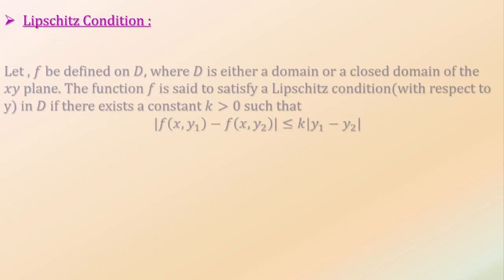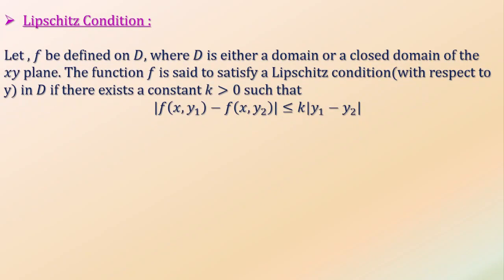Let's see what is Lipschitz condition. Let f be defined on D where D is either a domain or a closed domain of the xy plane. The function f is said to satisfy a Lipschitz condition with respect to y in D if there exists a constant k greater than 0 such that |f(x,y₁) - f(x,y₂)| ≤ k|y₁ - y₂|.